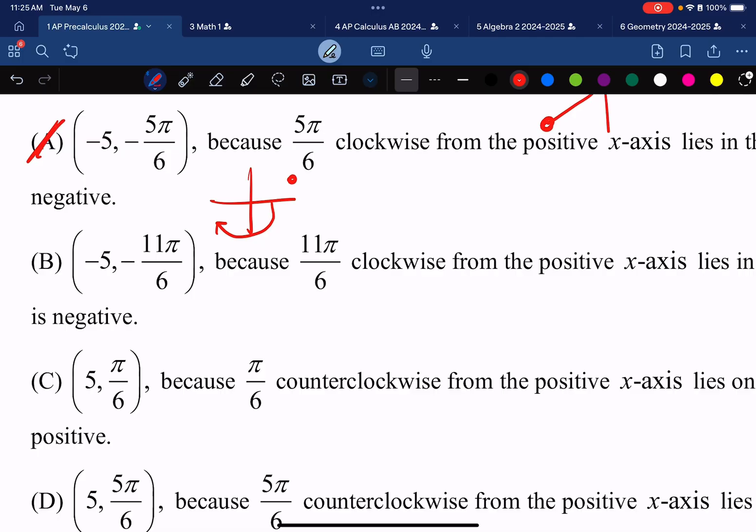What about the next one for part B? I'm going to find where negative 11π over 6. Again, negative means we're going clockwise. And 11π over 6 is almost all the way around.